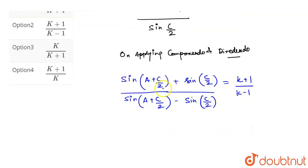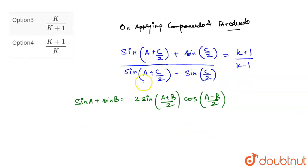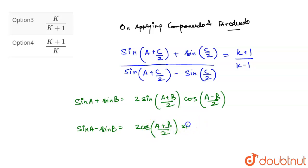Now there is an identity for sine A plus sine B, which is 2 sine((A+B)/2) cos((A-B)/2). And in the denominator we have sine A minus sine B, which is 2 cos((A+B)/2) sine((A-B)/2).